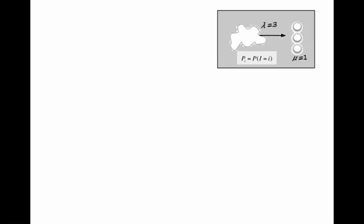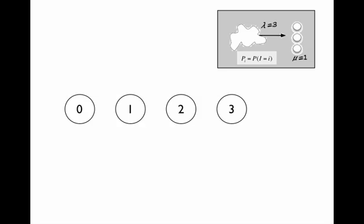The system can be in one of four states: Zero busy servers, one, two, or three busy servers. We then draw in the transition intensities.